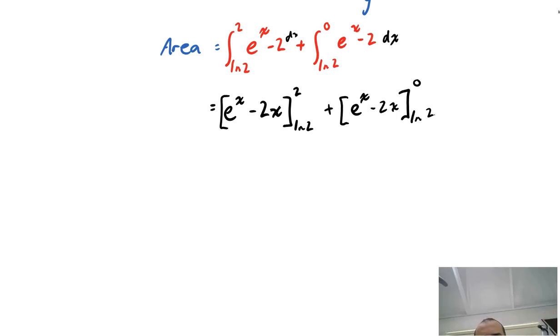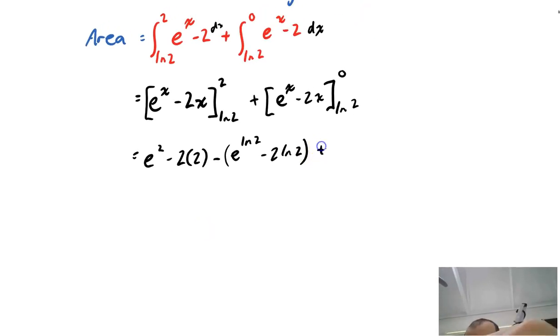That looks about right. Okay, and now I'm subbing in 2 and then subbing in ln2 and subtracting one from the other. So it's e to the 2 minus 2 times 2 minus e to the ln2 minus 2 ln2. And then adding in e to the 0 minus 2 to the 0 and then subtracting e to the ln2 minus 2 to the ln2.